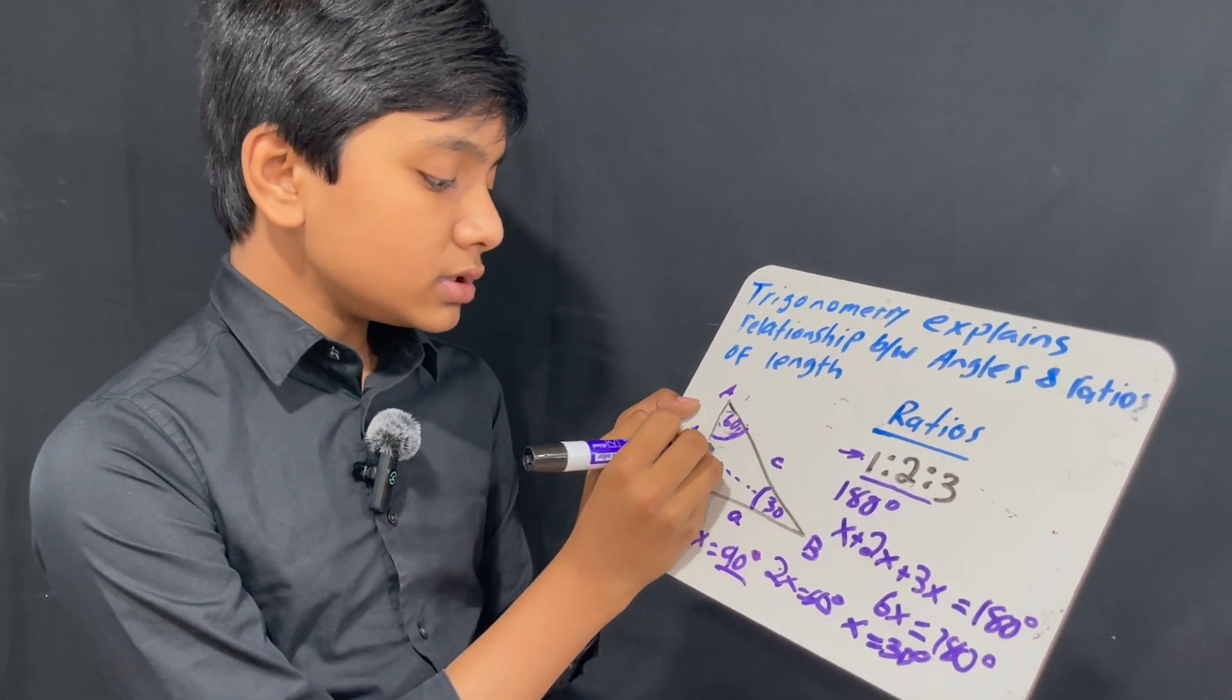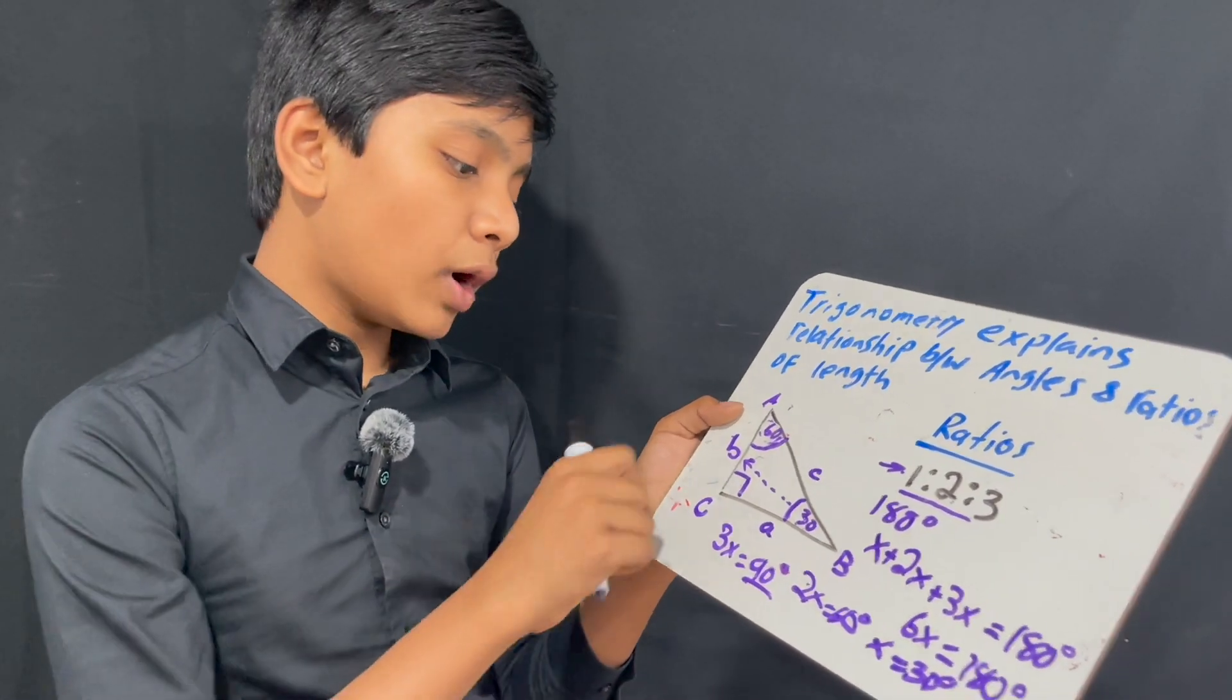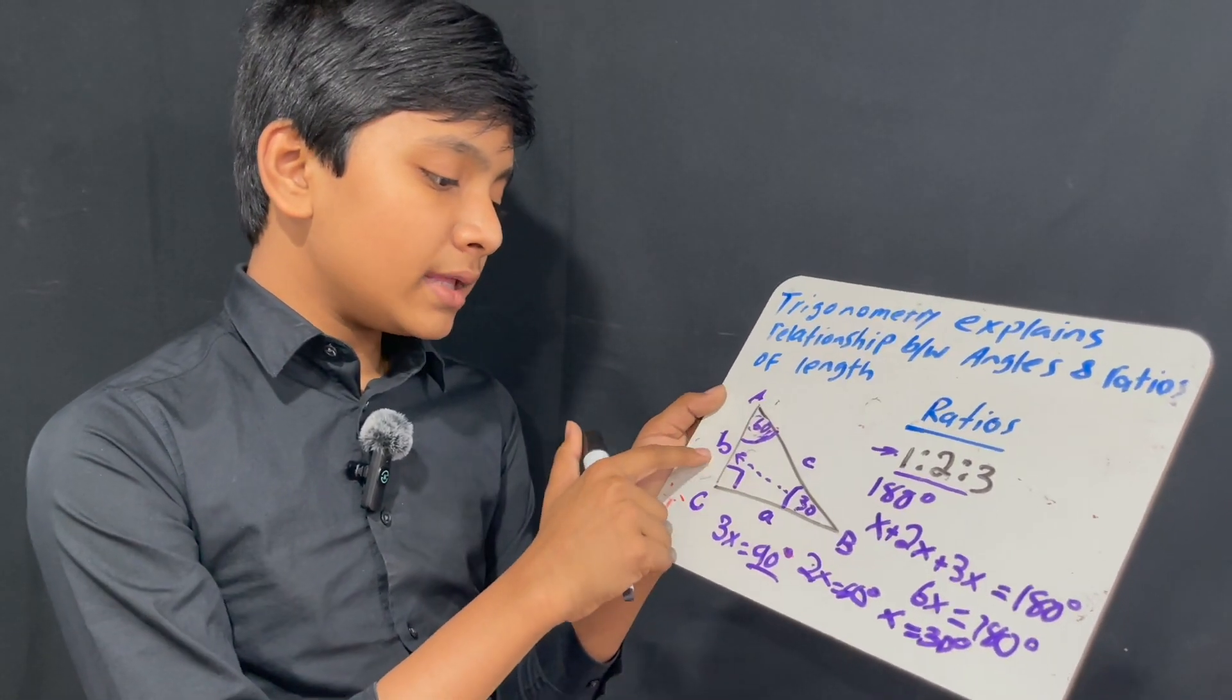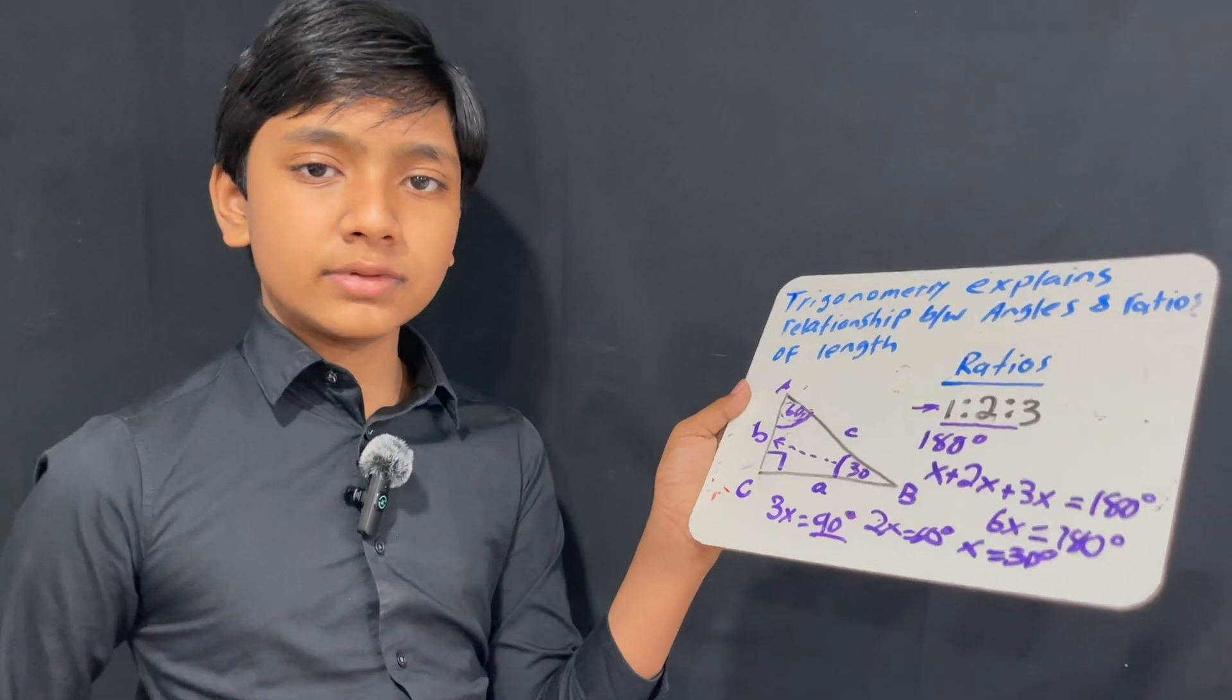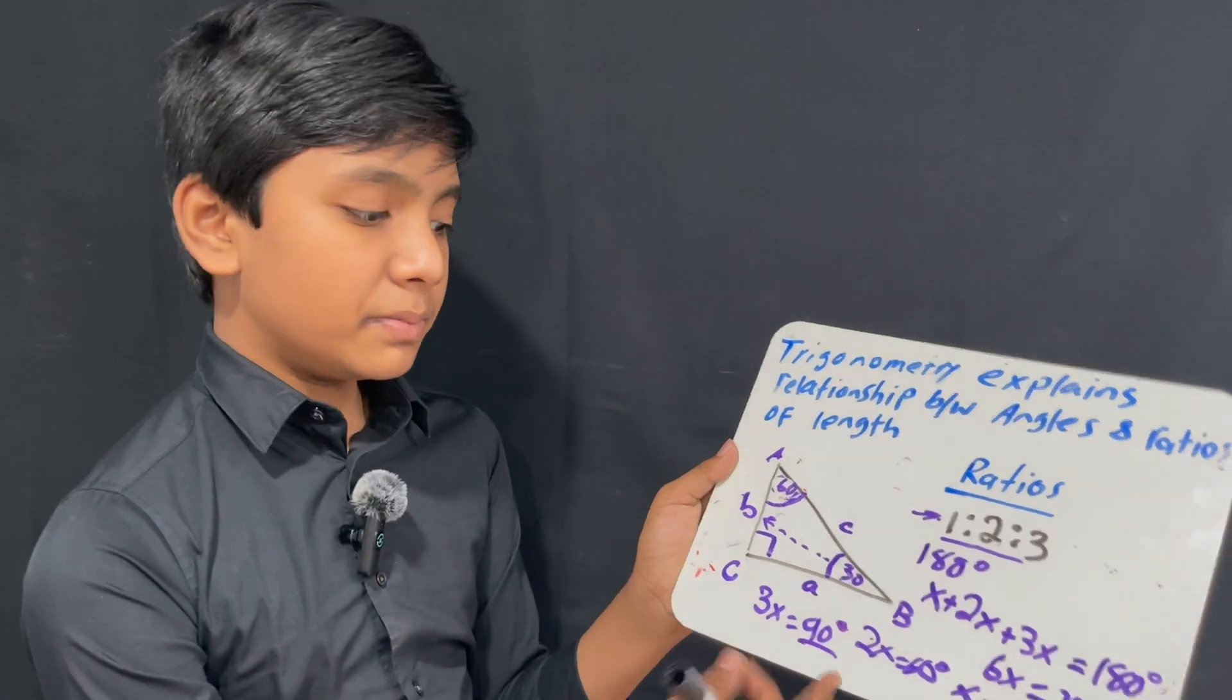the sides opposite to the lowest angles are the smallest. So, for example, b is opposite to 30 degrees, which is the smallest angle, so b is the smallest. So, I'll just keep it named b.